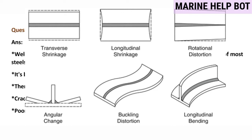As you can see in the image, these are the types of distortion that can result from cast iron welding. Angular, buckling, longitudinal, and rotational distortions are shown — these are the types of distortion caused by this defect.